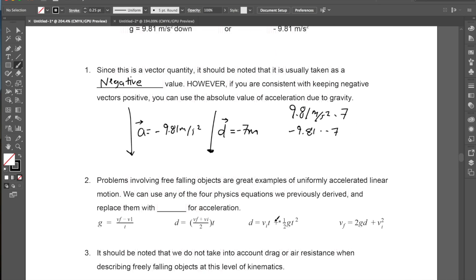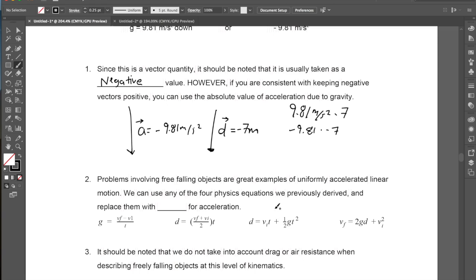Now the second is acceleration due to gravity, or the gravity constant, is still an example of uniformly accelerated linear motion, because no matter where you are on earth, it's usually consistently around negative 9.81 meters per second down, accelerating in a linear motion. Now we can use any of those four physics equations that we previously derived, and just substitute the a from them with g for acceleration due to gravity.